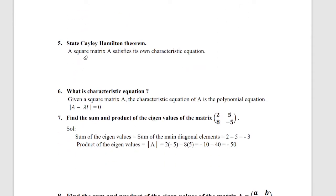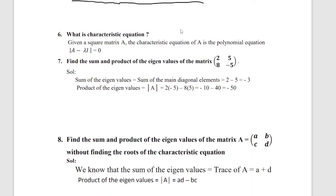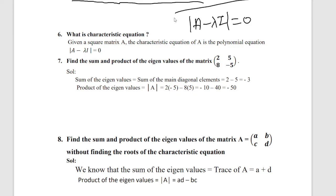The two-mark statement: every square matrix satisfies its own characteristic equation — this is called the Cayley-Hamilton theorem. The characteristic equation is the polynomial equation: determinant of (A minus lambda·I) = 0. This is the general formula for the characteristic equation.